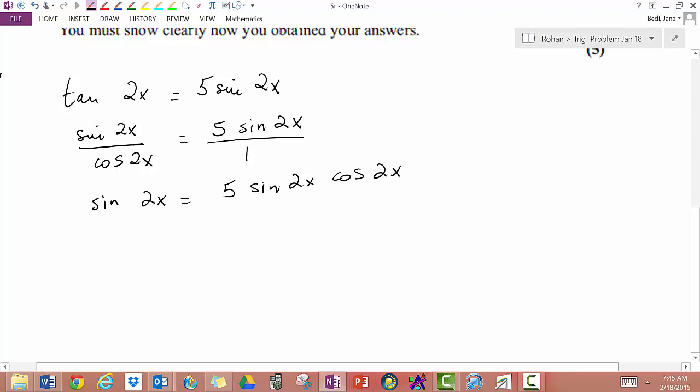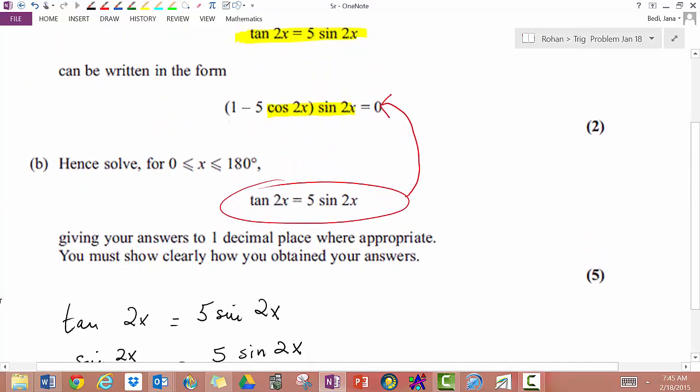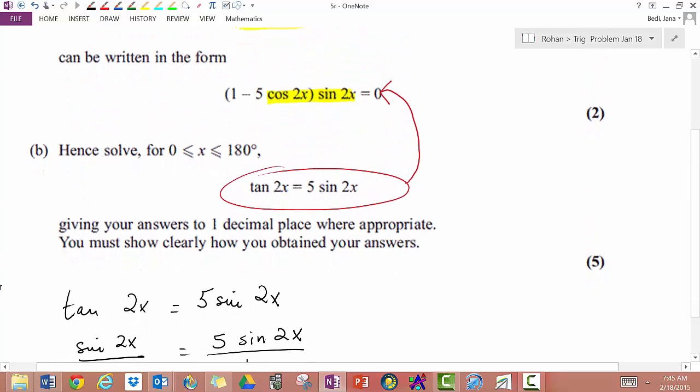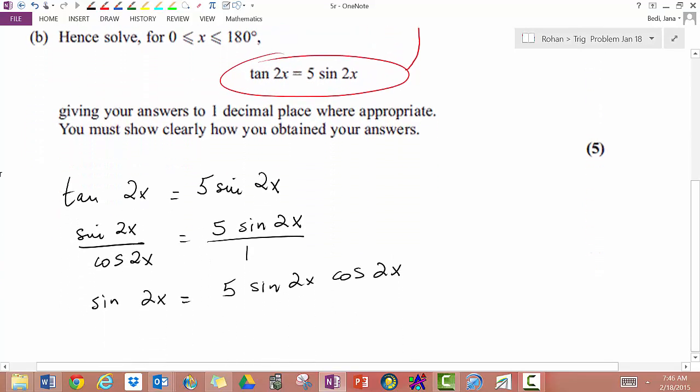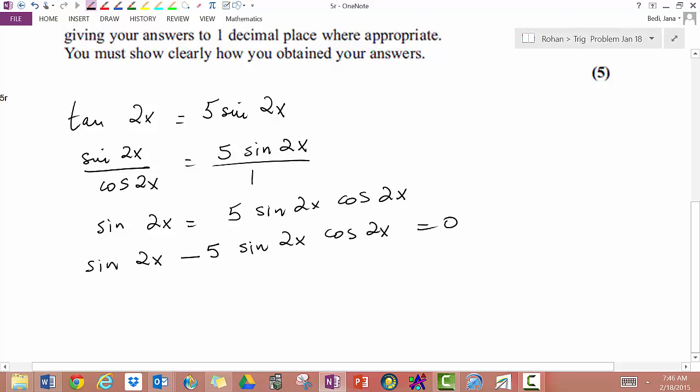Well you can see you have all the elements that you need in B. So let's just scroll up to that. So I've got sine and cosine and all I need to do is make that equal to 0. So let's bring the right hand side over to the left hand side and we get sine 2x minus 5 sine 2x cosine 2x equals 0.